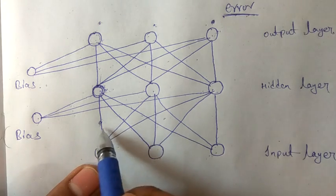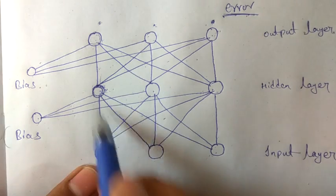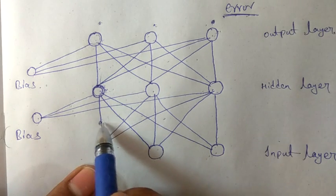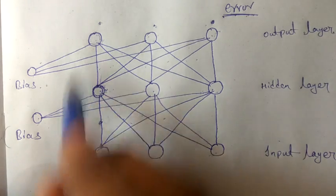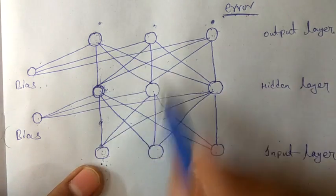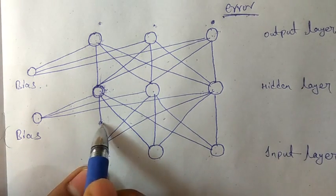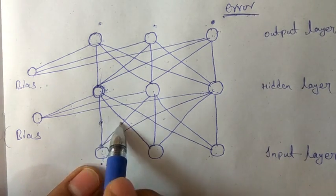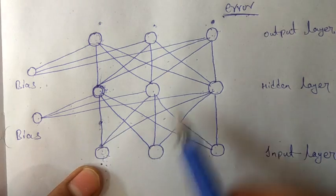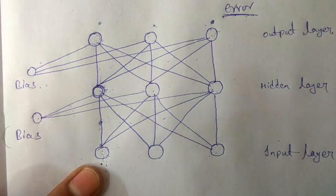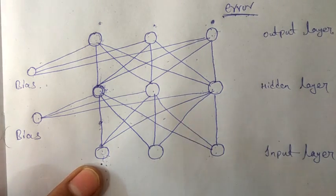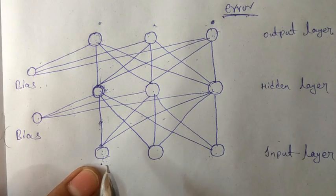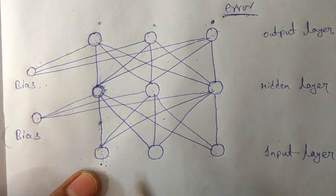We then calculate the forward pass again using the changed weights, and we do this again and again until we get weights such that our output is equal to or near our expected value. This process is called back propagation.